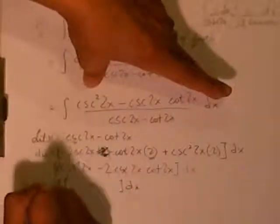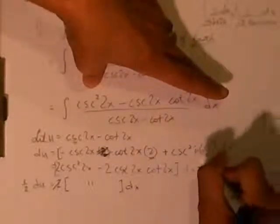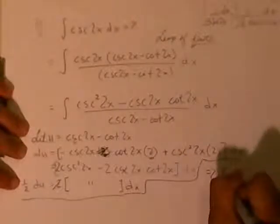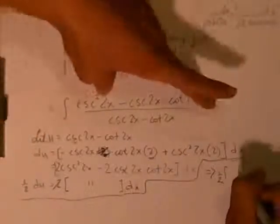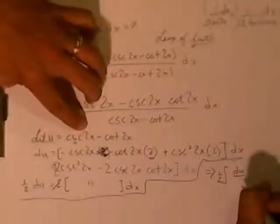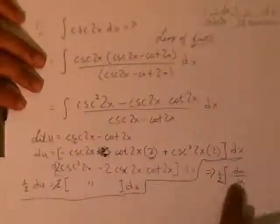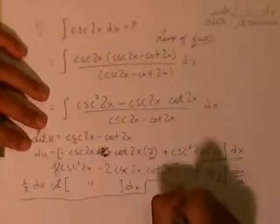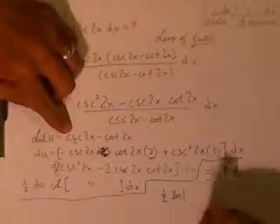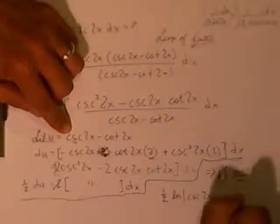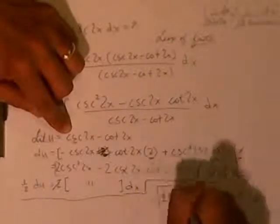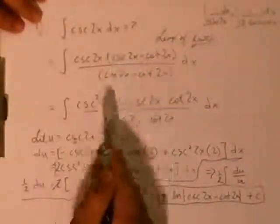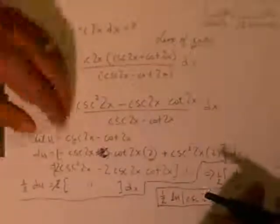We notice that expression matches our numerator, so we multiply by one half to get du equals the numerator times dx. The integral becomes one half times the integral of du over u, which is one half times the natural log of the absolute value of u — that is, natural log of the absolute value of cosecant of 2x minus cotangent of 2x — plus a constant. That's the solution. The leap of faith was multiplying by that expression — I would not have known without referencing the book.